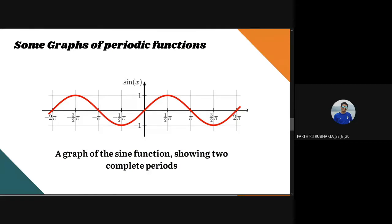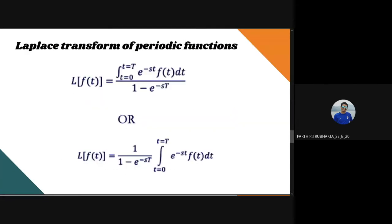Now that we have understood both Laplace Transform and periodic functions, let us apply Laplace Transform to periodic functions. The formula is: L{f(t)} = 1 upon (1 minus e raised to minus sT) times the integral from 0 to T of e raised to minus st times f(t) dt.